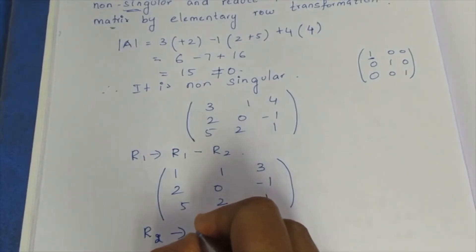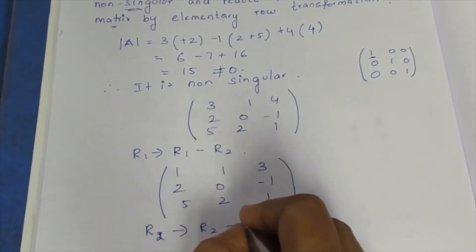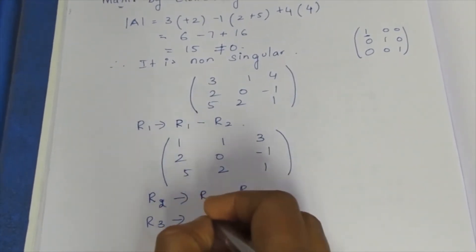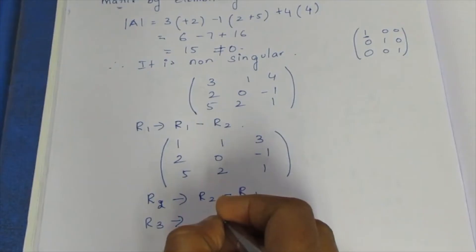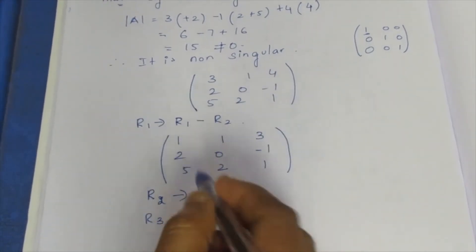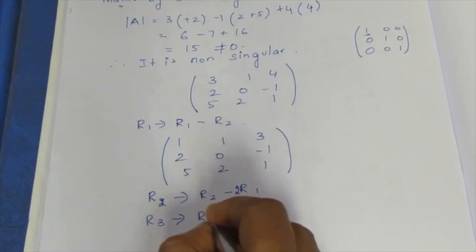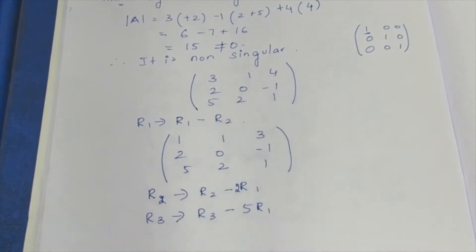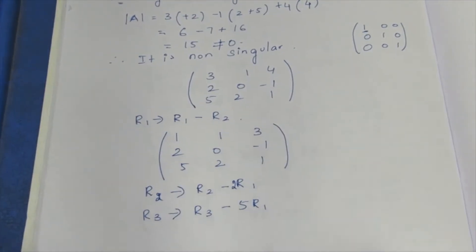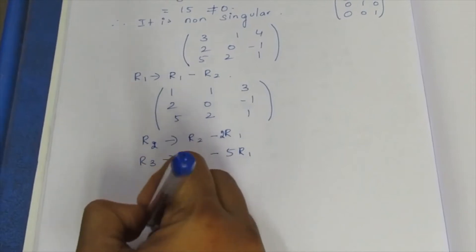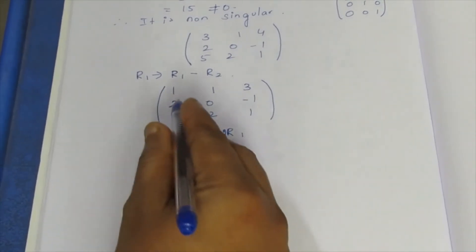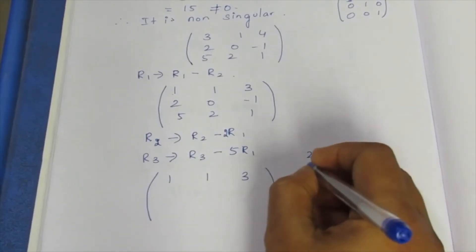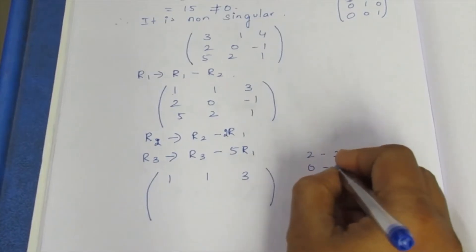Row two becomes row two minus row one. That applies to row three as well. Row three becomes row three minus five times row one. After this operation, the first column entries below the pivot become zero.